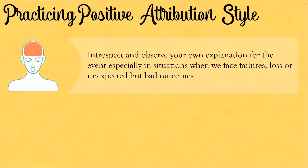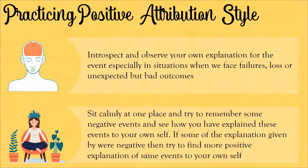Now let's see how you can practice a positive attribution style. Introspect and observe your own explanation for events, especially in situations when you face failures, loss, or unexpected bad outcomes. Sit calmly at one place and try to remember some negative events and see how you have explained these events to yourself. If some of those explanations were negative, try to find more positive explanations for those same events and write them down for yourself.